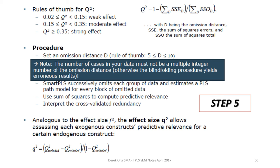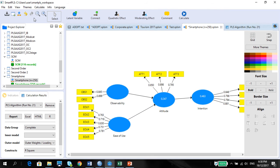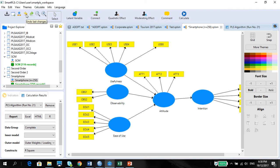It is actually a very good way of looking at whether or not the data sets can actually work on their own — when multiple omission distances using a blindfolding procedure can still have a strong predictive value on the endogenous variable. We are going to do the procedure using the same variable model, the smartphone, using the procedure called blindfolding.